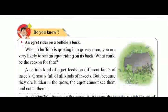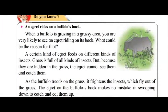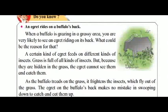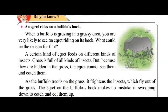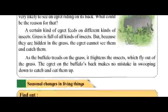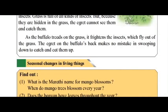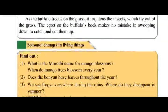An egret rides on a buffalo's back. When a buffalo is grazing in a grassy area, you are very likely to see an egret riding on its back. A certain kind of egret feeds on different kinds of insects. Grass is full of all kinds of insects, but because they are hidden in the grass, the egret cannot see them and catch them. As the buffalo treads on the grass, it frightens the insects, which fly out. The egret on the buffalo's back swoops down to catch and eat them.